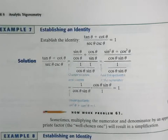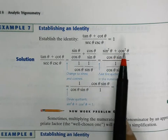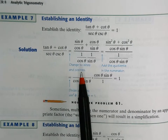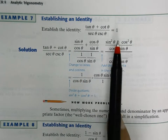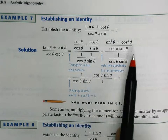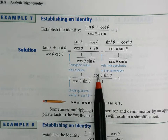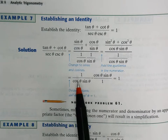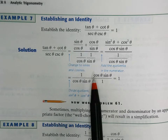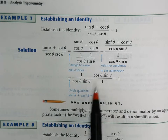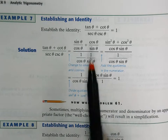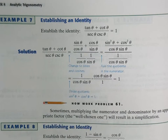They replaced the statement sine squared theta plus cosine squared theta with a one. So you have one over cosine of theta times sine of theta, multiplied by the reciprocal. Your factor of cosine cancels out and your factors of sine cancel out because this is all multiplication, and you end up with one over one. You can say one is equal to one — identity verified.